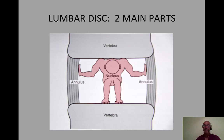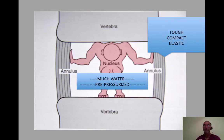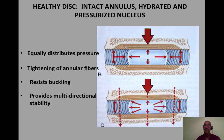The lumbar disc has two parts: an inner portion called the nucleus and an outer portion termed the annulus. The inner portion has high water content and is pre-pressurized. The outer portion is very tough, compact, and a bit more elastic, and these two parts of the disc work together.